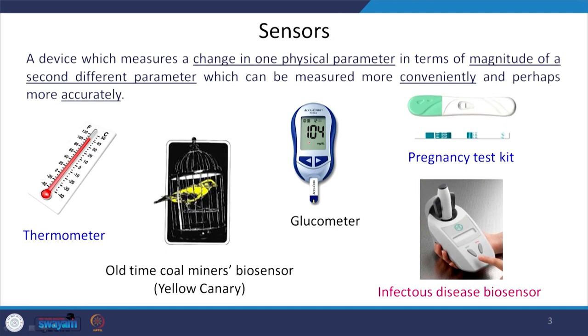A sensor is a device which measures a change in one physical parameter in terms of the magnitude of a second, different parameter which can be measured more conveniently and perhaps more accurately. This means that you want to measure something in terms of something else which can be measured more conveniently and accurately.